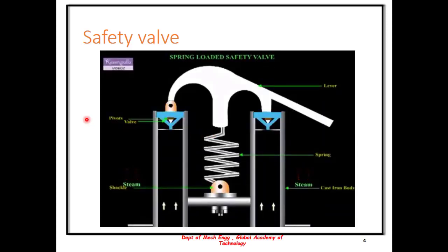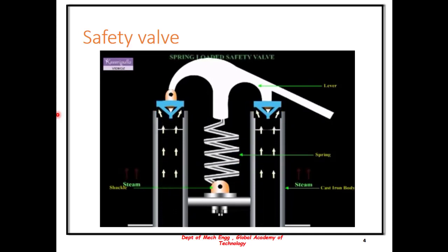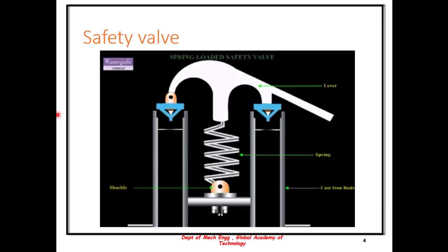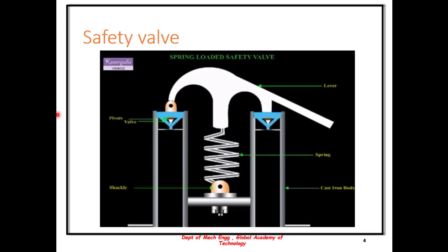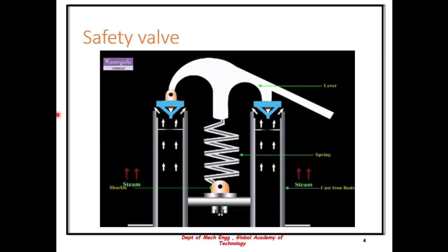The working of the spring loaded safety valve is quite simple. The spring loaded safety valve is loaded by means of a spring instead of weights. It consists of a Y-shaped cast iron body having two limbs called the branch pipes which have valve seats at their top. The two separate valves are placed over the valve seats.